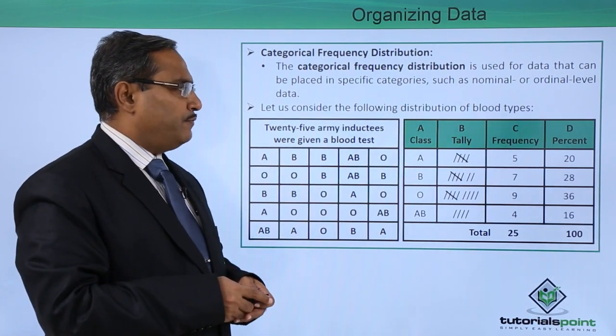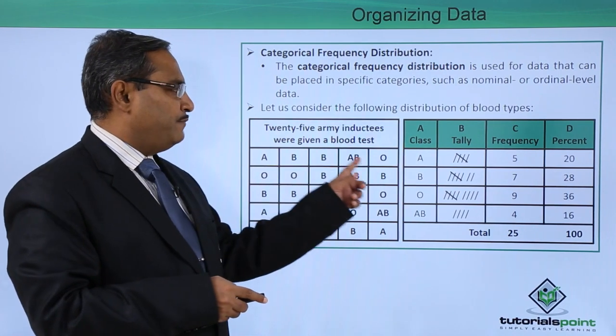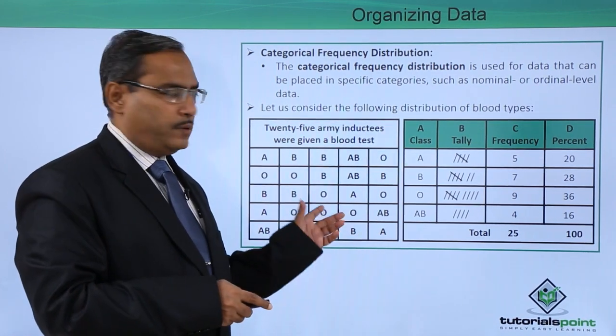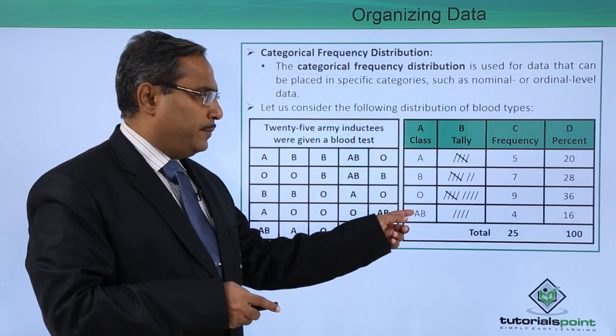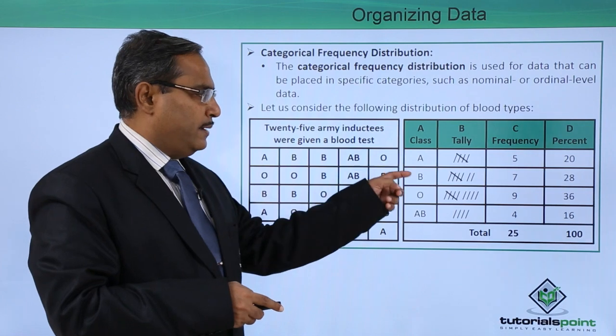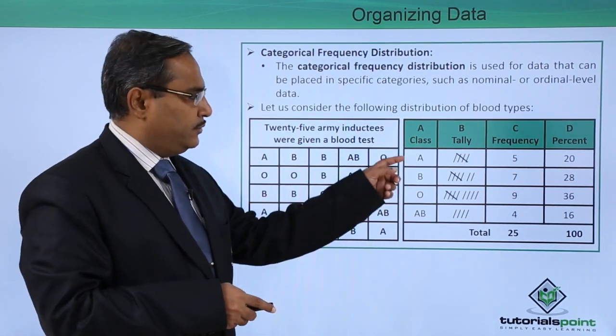Let us consider the following distribution of blood types. Here we are having 25 army inductees, and their respective blood types we have listed here. Now, here we are having these classes, that means distinct blood types: A, B, O, and AB. They are belonging here, so a distinct set we have made.